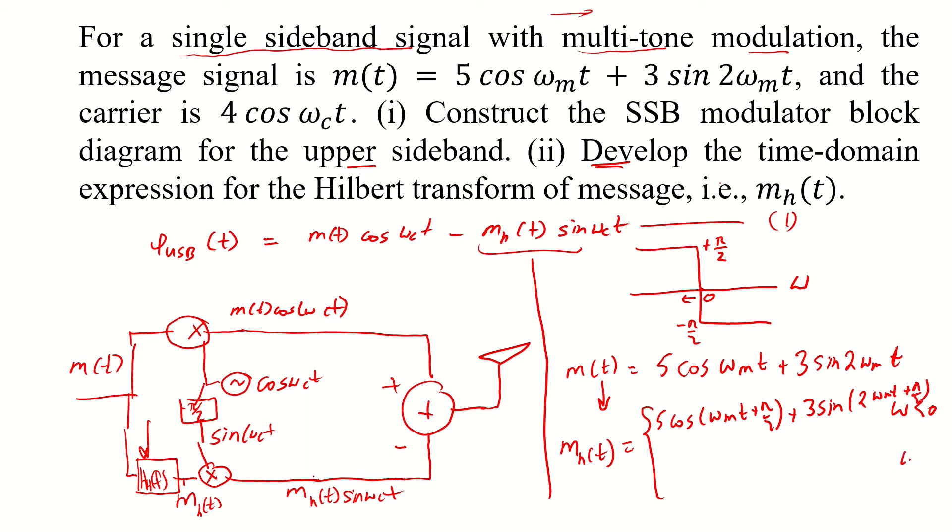And in the other case when omega is greater than 0, we would have 5 cos omega mt minus pi by 2 plus 3 sin 2 omega mt minus pi by 2. So there you have it, the Hilbert transform of the message signal that is m h of t.